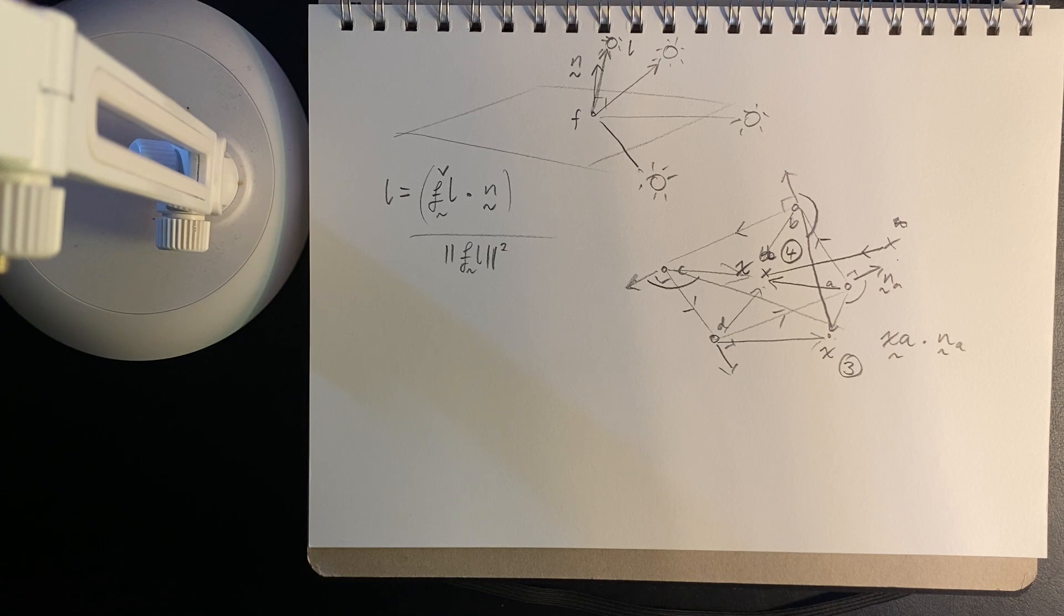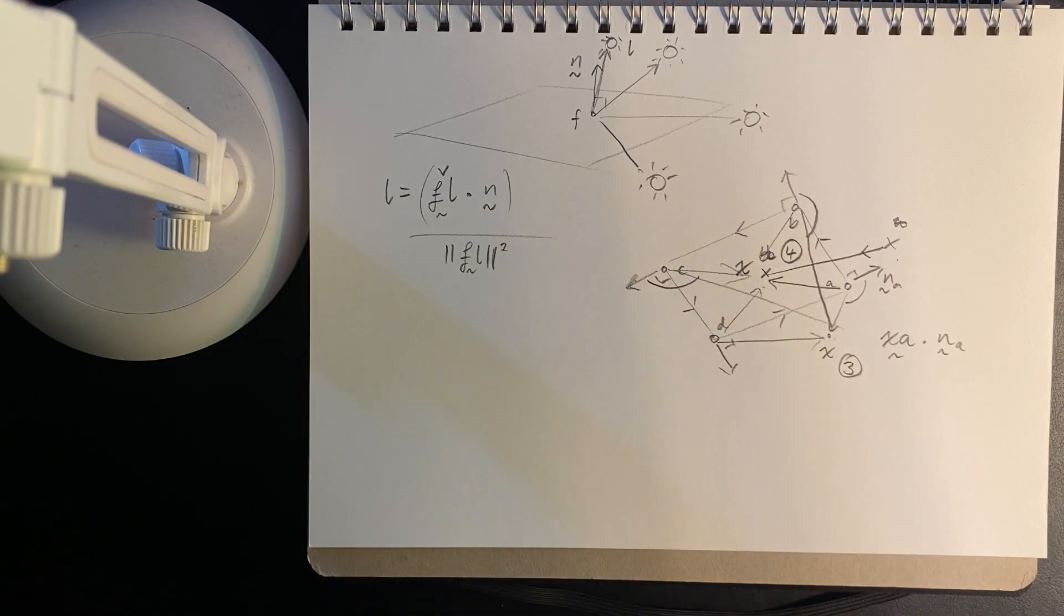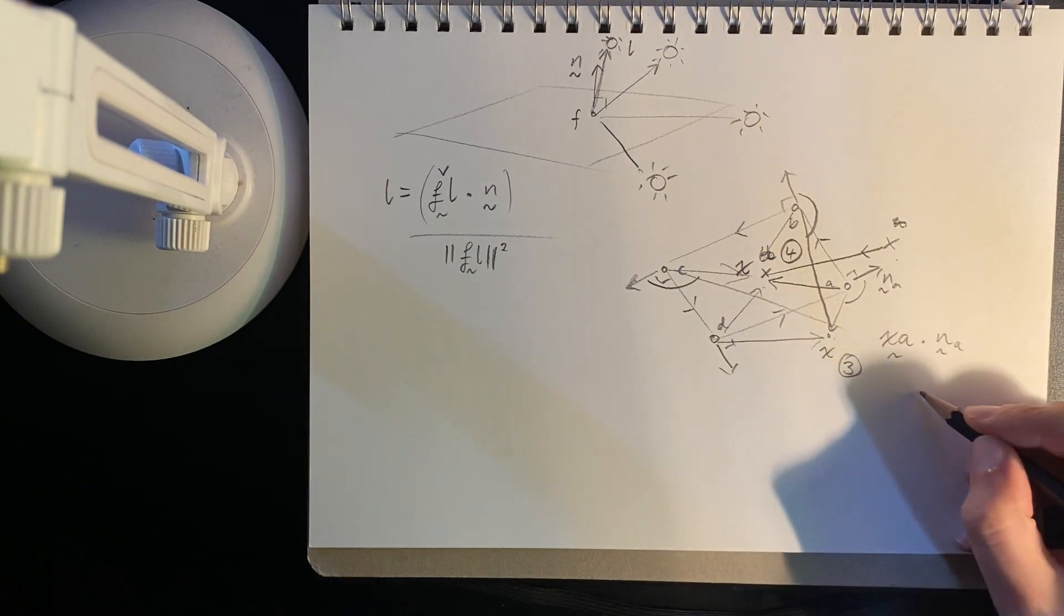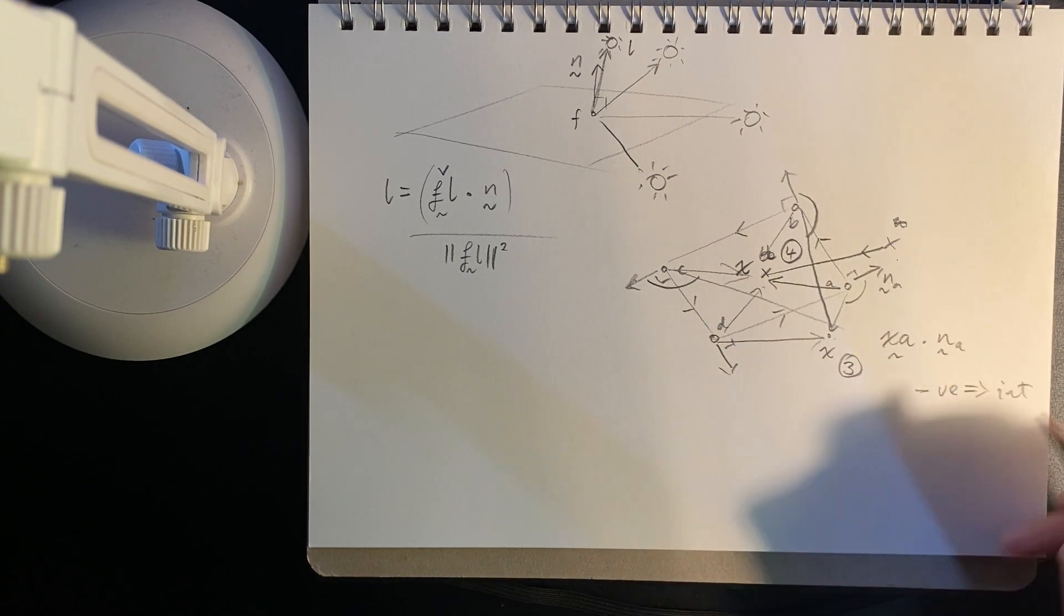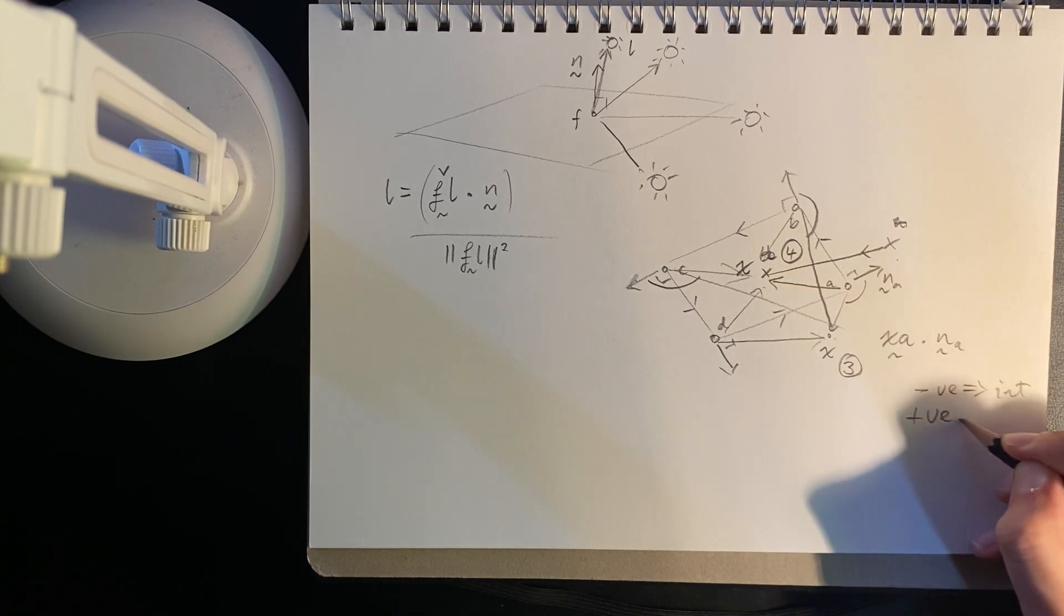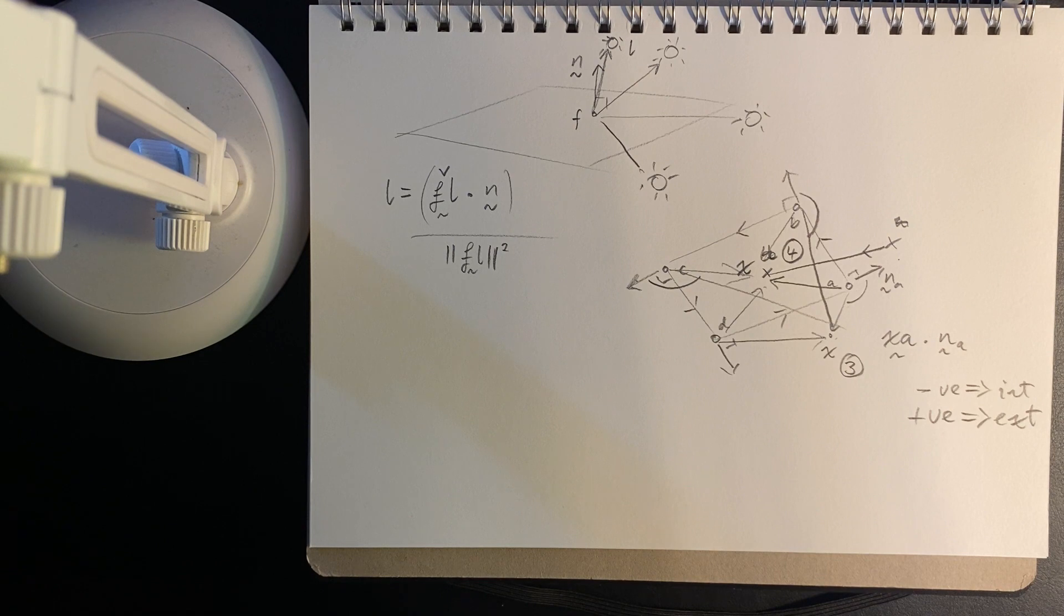And so what we can do is we can go for each edge, take the dot product, determine based on the sign of the dot product, whether it's interior or exterior. And again, we have negative implies interior, positive implies exterior. Get that total.